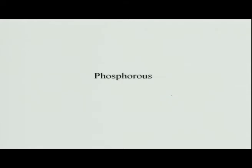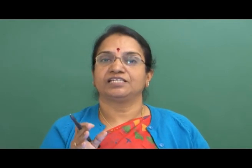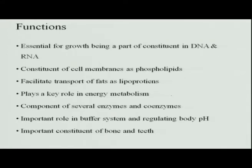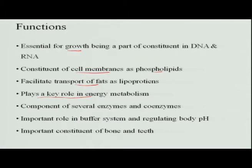The next important mineral alongside calcium is phosphorus. Calcium phosphate is found in bones, making phosphorus another critical mineral. Its functions include being essential for growth as a part of DNA and RNA, and serving as a constituent of cell membranes as phospholipids — especially in the brain, where it is important for brain function. Phosphorus also facilitates the transport of fats as lipoproteins and plays a key role in energy metabolism, as ATP is the end product of energy metabolism.